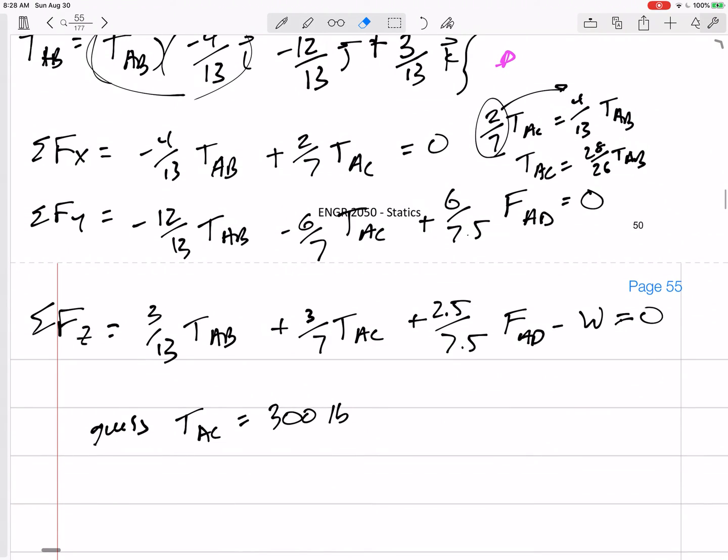Just guess. If you guess wrong, it's not much more work, right? We showed that it was not much more work, if you guess the wrong answer. So, I'm going to say TAC is 300. And, I kind of got that from here. That TAC is, whatever, TAB is, times one point something.